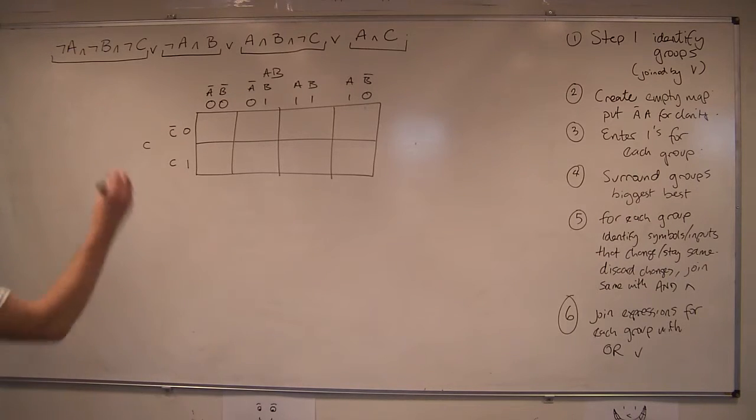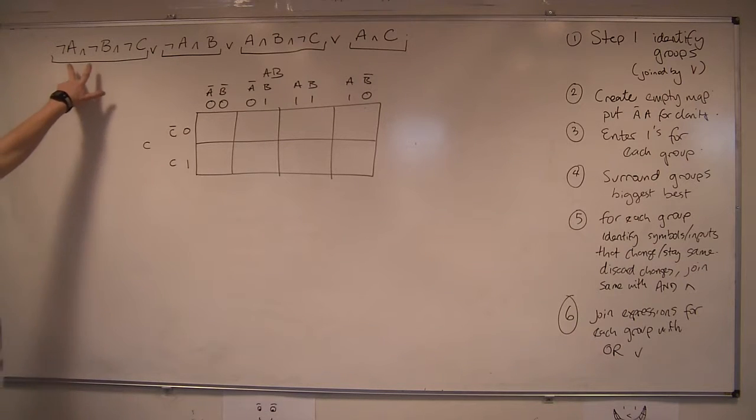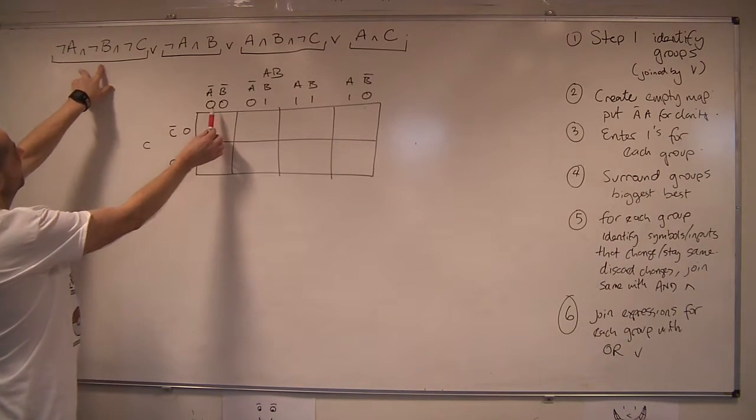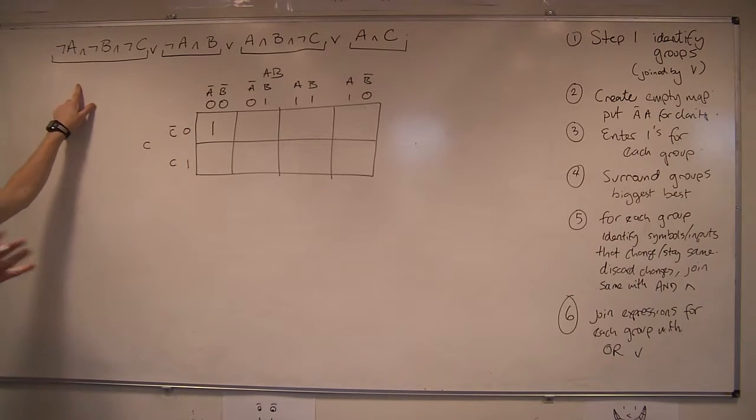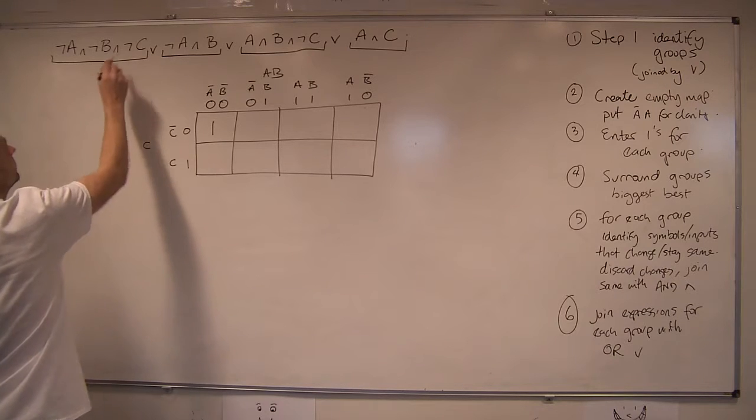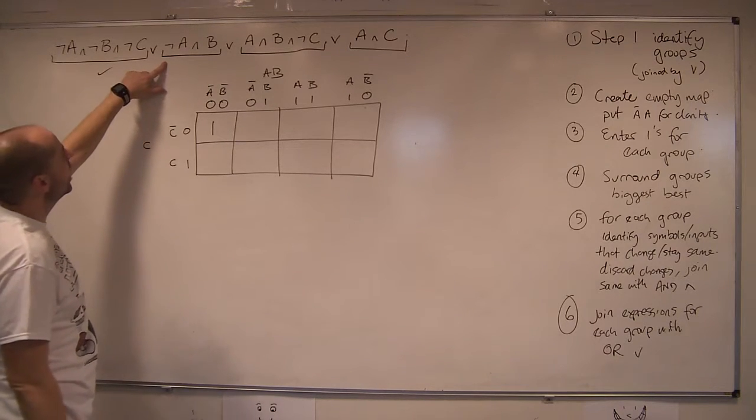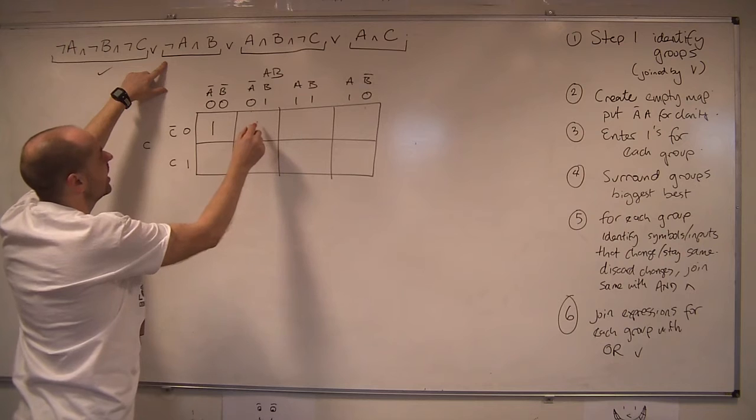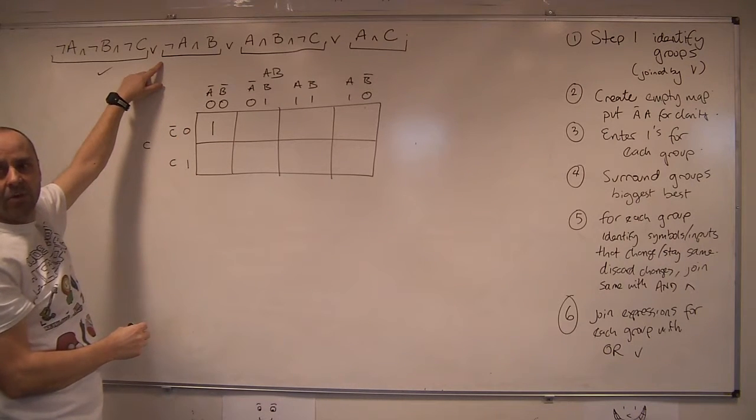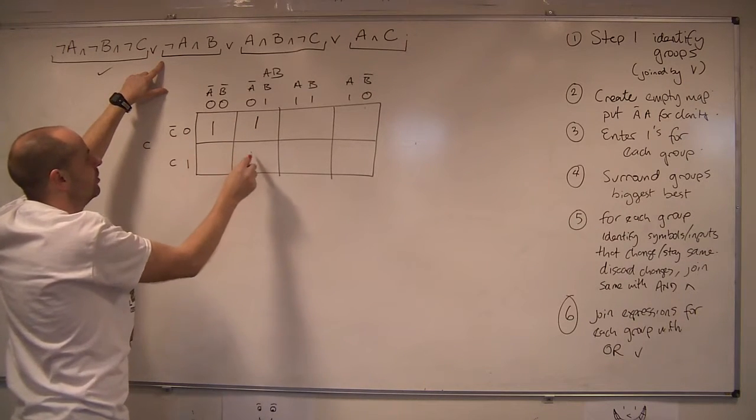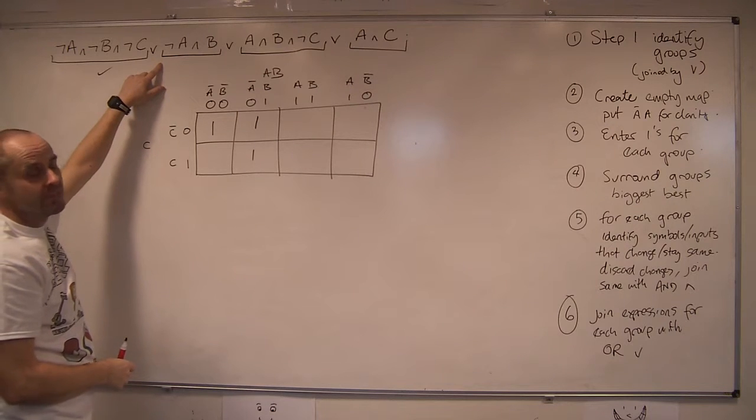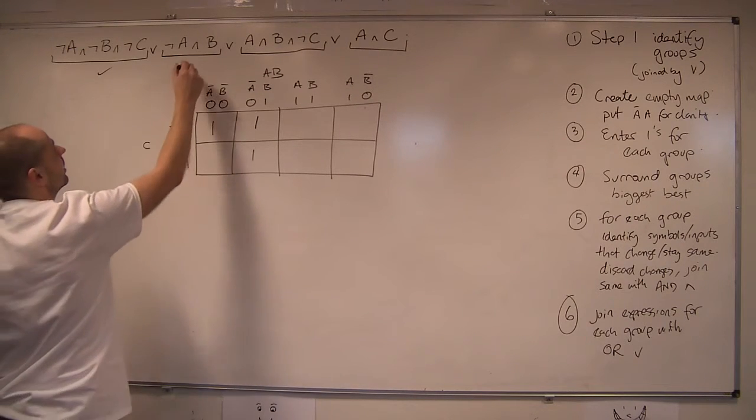Now we're going to do for each group, we're going to identify where the ones go in the grid. So looking at this, we're looking for naught A and naught B. So that's there. And naught C. So that is that location. So your map might not look identical to mine if you've done the naughts and ones in a different order. Doesn't matter. So I've done that one, tick it off. Then we're looking for naught A and B. So naught A and B is there, but there's no C term in that one. So C is irrelevant. So I have to fill the entire column in. So whether it's C or naught C, fill it in. If you don't do that, then the map will go completely wrong.